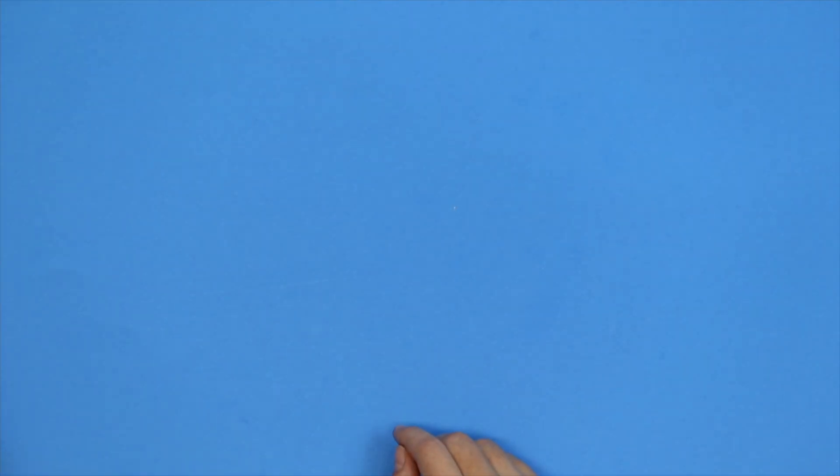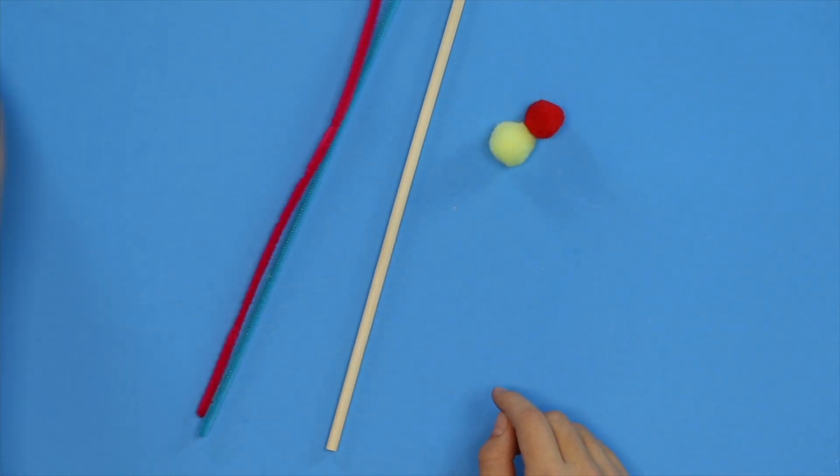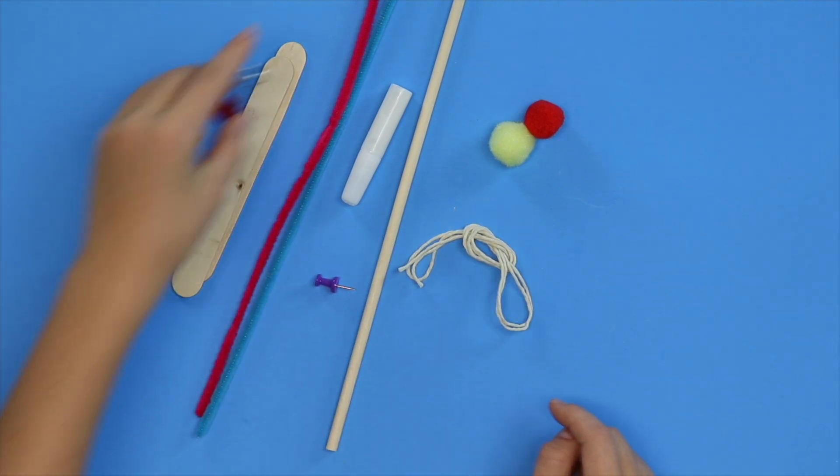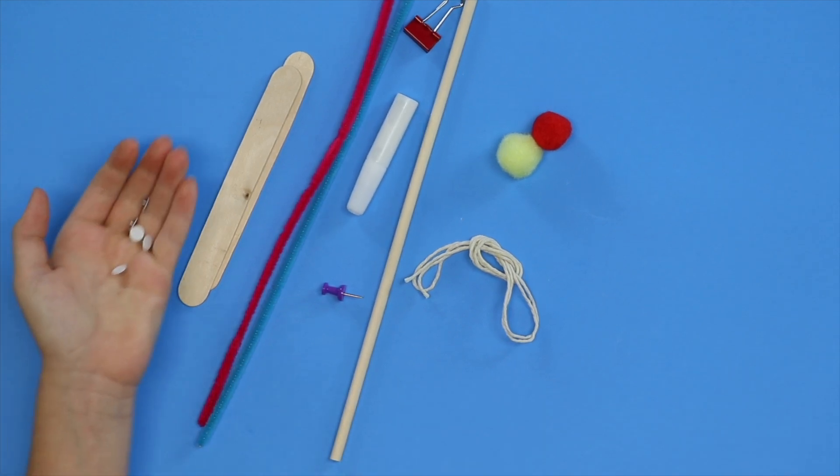Okay, should we see what's in our kit today? In our kit today we have a wooden dowel, two puffballs, two pipe cleaners, some glue, some string, two popsicle sticks, a push pin, and a binder clip, and some googly eyes. I love those googly eyes. They make everything come to life.